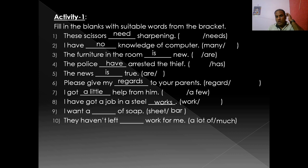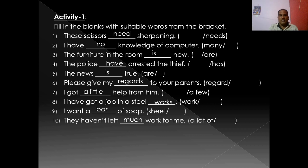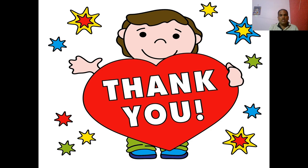'I have got a job in a steel works' — works means factory. 'I want a bar of soap' — we use 'bar of soap' to make it countable. 'They have not left much work for me' — work is uncountable, and in a negative sentence we use 'much', not 'a lot of.' A lot of is used in affirmative sentences. I think you have got a clear idea about countables and uncountables. Thank you very much.